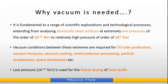Vacuum conditions between these extremes are required for the production of vacuum furnaces, TV tube production, vacuum coating, semiconductor processing, particle accelerators, and space simulation. High ultra-pure vacuum is needed for the production of some electronic components. Low pressures of 10⁻¹¹ Torr are also used for freeze-drying foodstuffs — foodstuffs are preserved using vacuum technology.